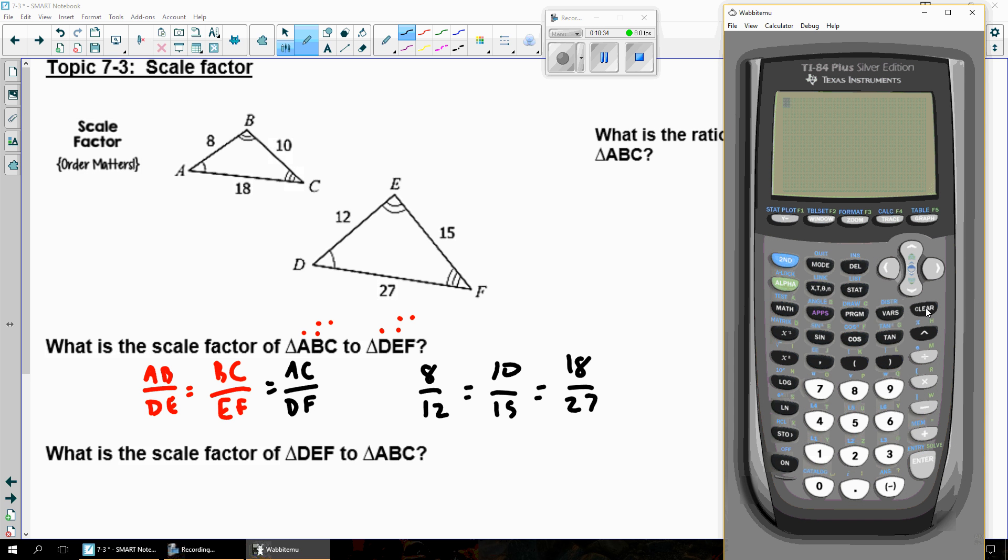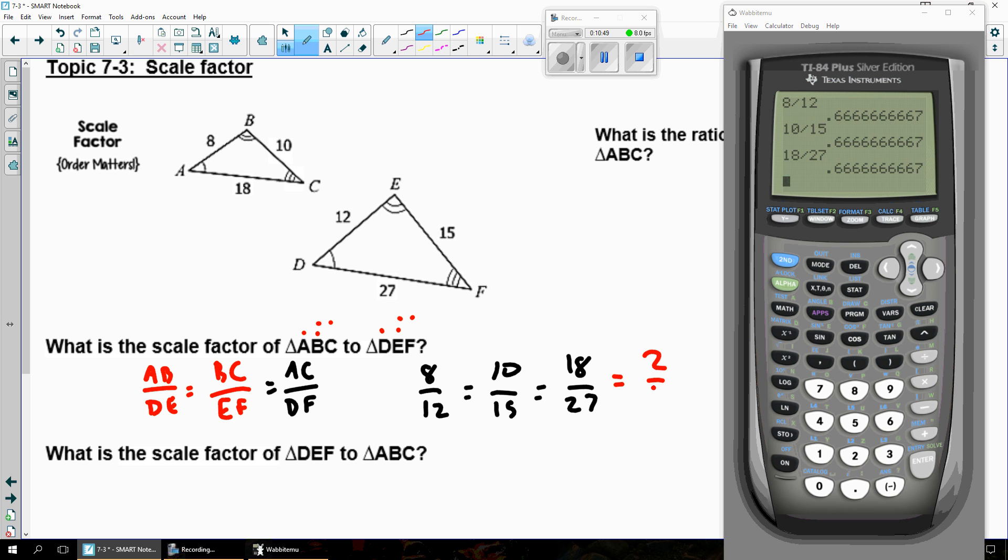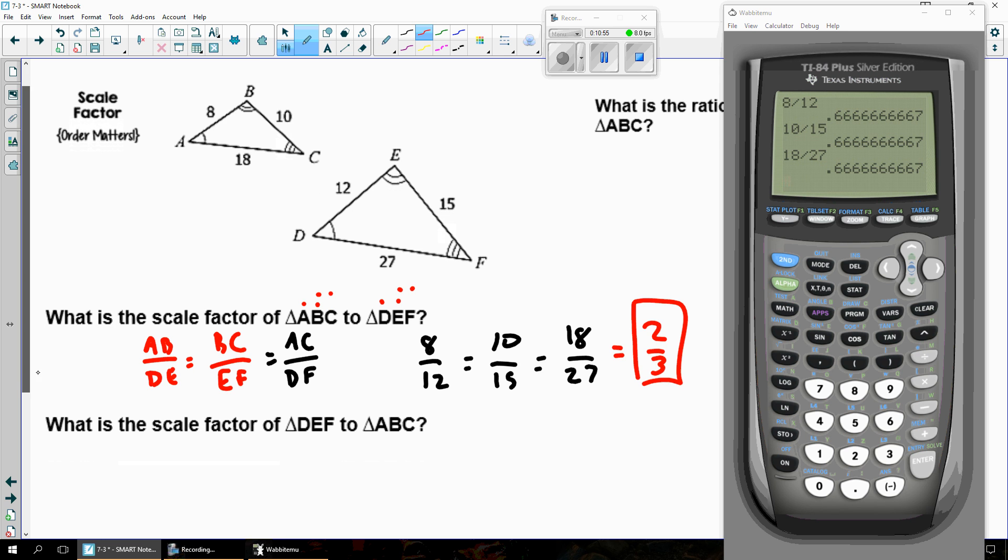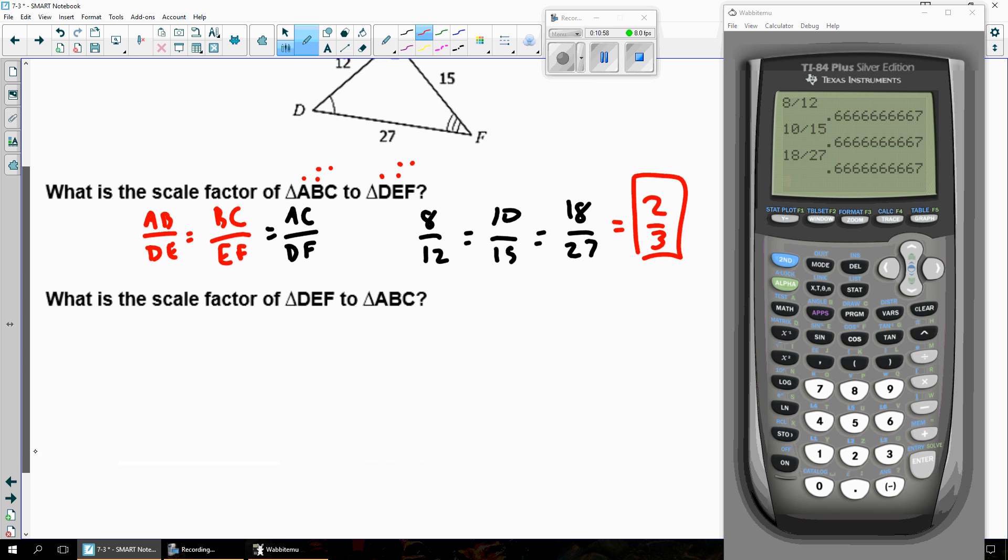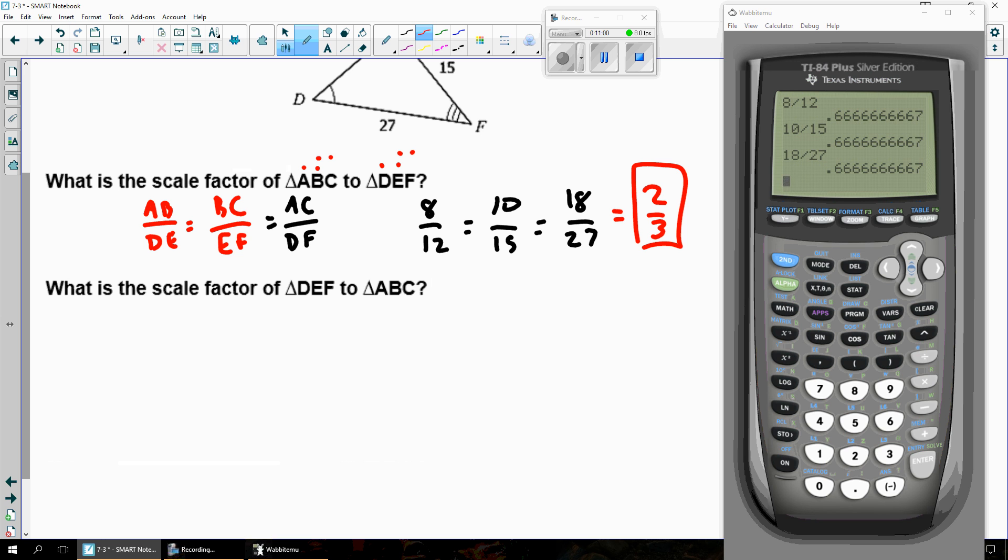If I rewrite that whole thing, the first fraction, AB was 8 and DE was 12. BC was 10 and EF was 15 and AC is 18 while DF is 27. If I were to use my calculator to simplify all of those, 8 divided by 12, 10 divided by 15, and 18 divided by 27, they're all the same. So this will reduce to two-thirds. That's the scale factor. Now, really, I didn't need to do it for all three of them. If I do it for one, it's obviously the same for each of them because the triangles are similar.